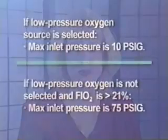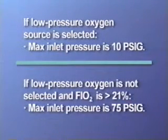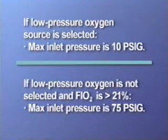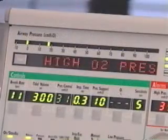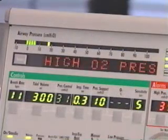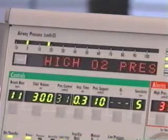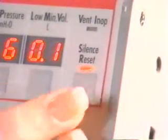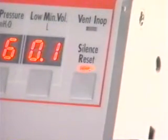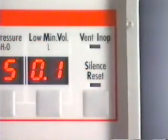The high oxygen pressure alarm occurs when the average oxygen inlet pressure exceeds the acceptable limit for the type of oxygen source being used. If the low pressure oxygen source is selected, the maximum inlet pressure is 10 psig. If the low pressure oxygen source is not selected and the FiO2 is set to greater than 21%, the maximum inlet pressure is 75 psig. When a high pressure oxygen alarm occurs, the high pressure oxygen message is flashed in the display window and the audible alarm is sounded. Press the silence reset button, then press it again to reset the alarm.